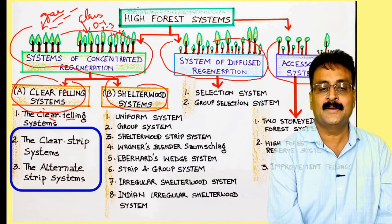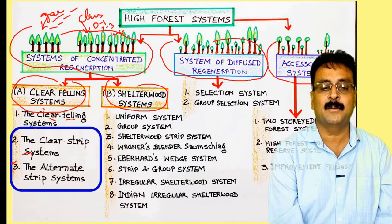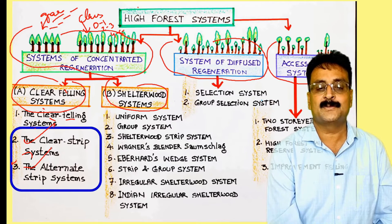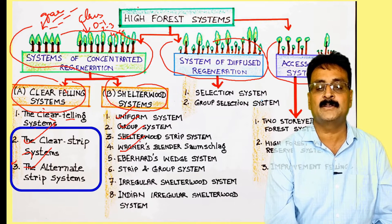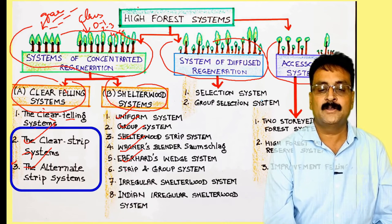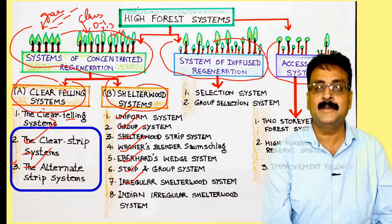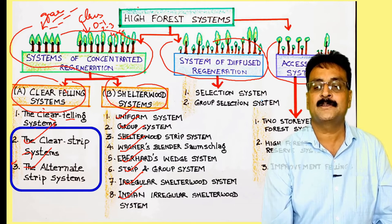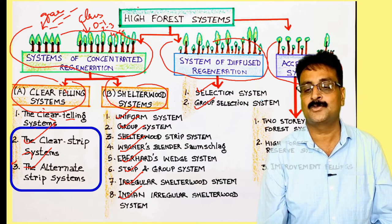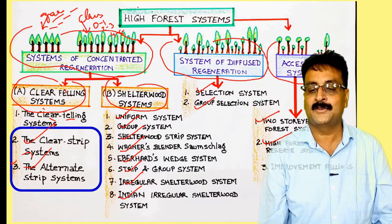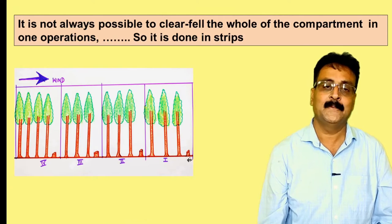We discussed the clear felling system in the previous lecture. In this lecture, we will discuss the clear strip system and the alternate strip system. In coming lectures, we will cover the uniform system, the group system, the shelter wood strip system, Wagner's wedge system, the irregular shelter wood system, the Indian irregular shelter wood system, the selection system, the group selection system, and the two-storied high forest system.